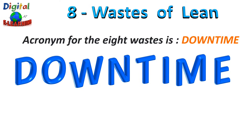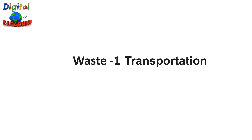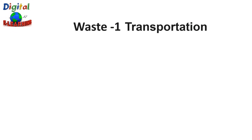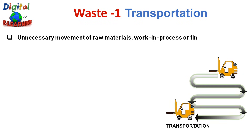Let us look at each one of them in more detail. The first category of waste is Transportation. Transportation is the unnecessary movement of raw material, work in process, or finished goods. The actual transportation of a product adds no value, and it is essential to minimize these costs and avoid moving material or resources unnecessarily.